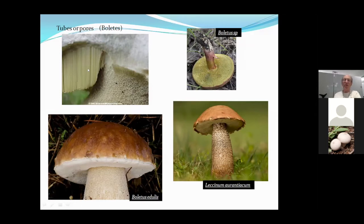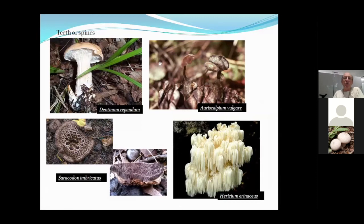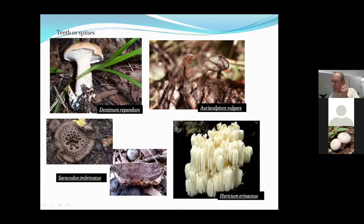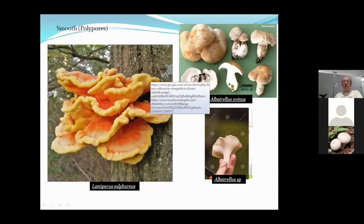Another group has little teeth underneath the cap. Dentinum repandum, the hedgehog fungus, is delicious. Sarcodon imbricatum, the hawkswing, is also great to eat and very common in Colorado. Hericium erinaceus, the lion's mane, is now grown commercially and has medicinal properties. These are all spine or teeth fungi. Auriscalpium vulgare, a cute one growing on pine cones, has a little off-center stalk and spines underneath.